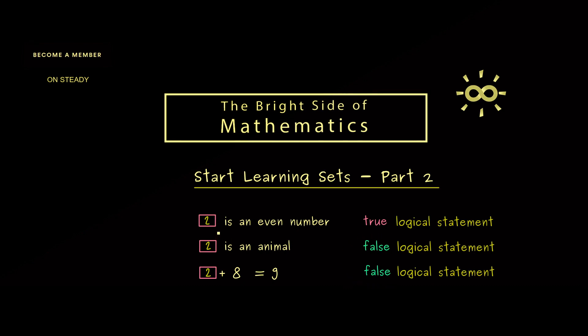Now the important thing here is when you change the object you put in, this could also change the truth value. For example, putting in the number 1 we get a false logical statement for the first one but a true one for the last one here. Understanding this whole concept here is the essential step in the construction of sets. So what you saw here were 3 examples of so-called predicates.